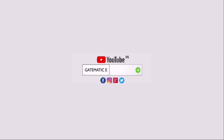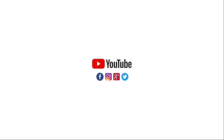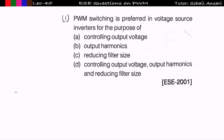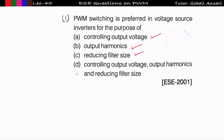The first problem: PWM switching is preferred in a voltage source inverter for the purpose of controlling output voltage — this is correct; output harmonics — also correct; reducing filter size — also correct. So option D, all three: controlling output voltage, output harmonics, and reducing filter size, is the answer. This concept was already explained in the PWM inverter lecture.